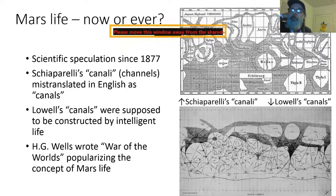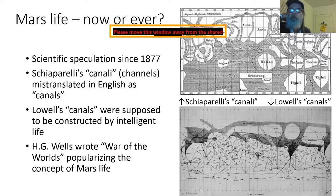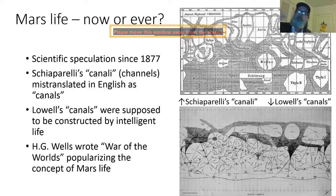The possibility of life on Mars then became very popular. H.G. Wells wrote the famous novel War of the Worlds, which described a scenario where there was extant, intelligent life on Mars. This was a very popular and influential book.